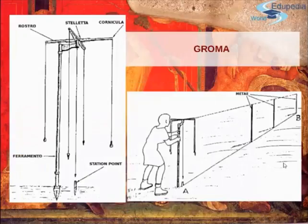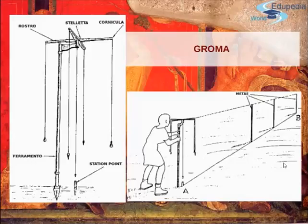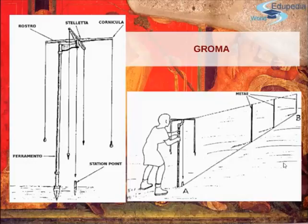Another instrument is the groma: basically a stick nailed into the ground with a horizontal wooden cross on top. From each arm of the cross hangs a plumb line, used to mark the grid lines straight. All the street lines were marked this way. They were really thorough — they didn't just start a town casually; the process was very strict.